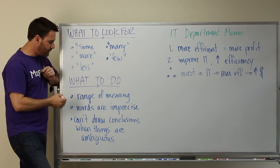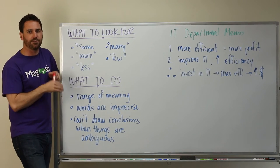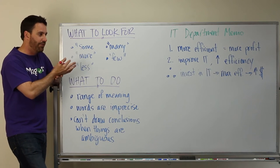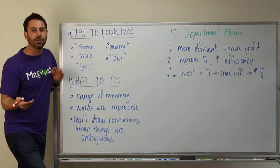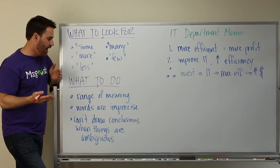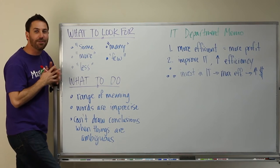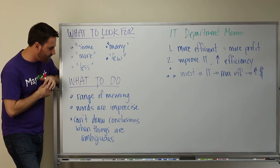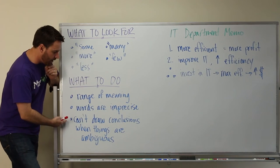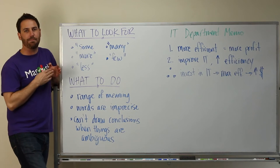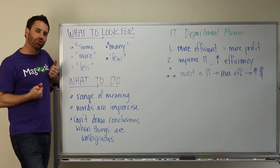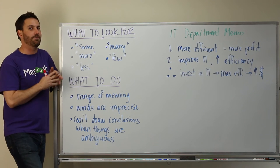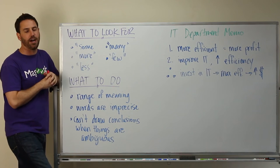So what to do? Talk about the range of meaning. Just like I did in my example, I talked about how there's a lot of ways to interpret what more means when it comes to cookies in the Magoosh office. So you'd want to do the same thing. Talk about how the words are imprecise and that you can't draw conclusions when things are ambiguous. It's hard to draw a really strong conclusion if you aren't sure what the words mean, if you aren't clear on exactly what we're talking about.